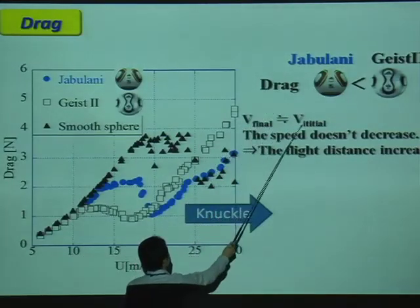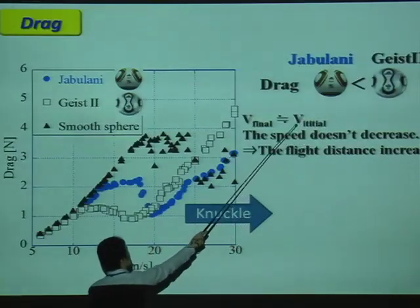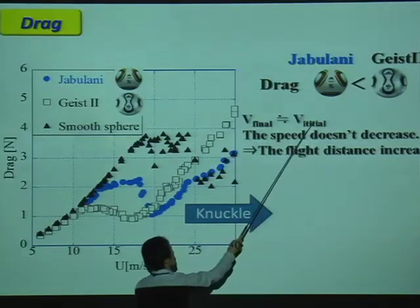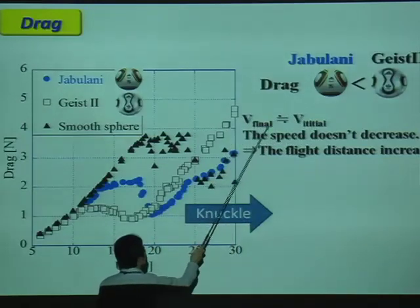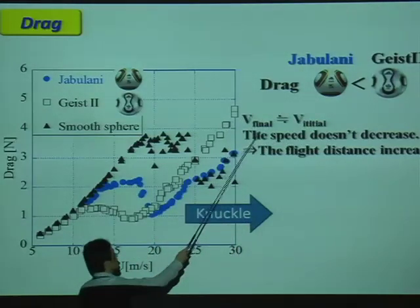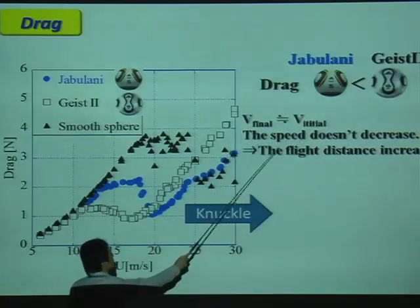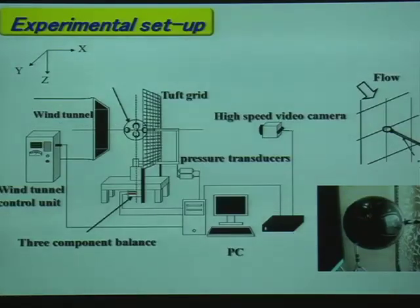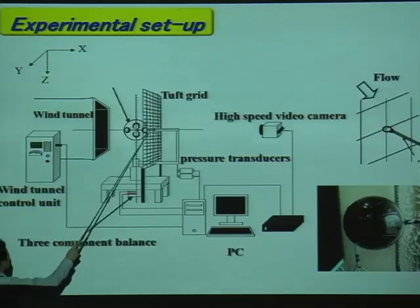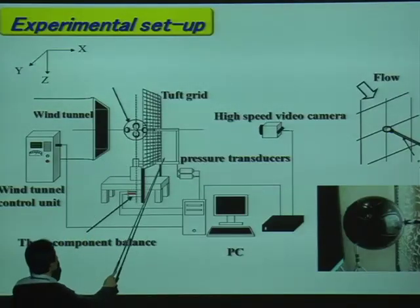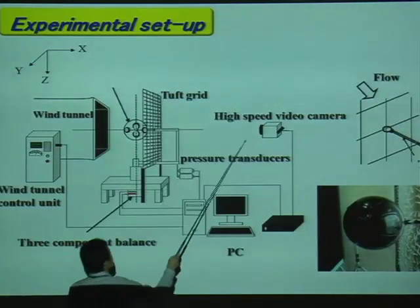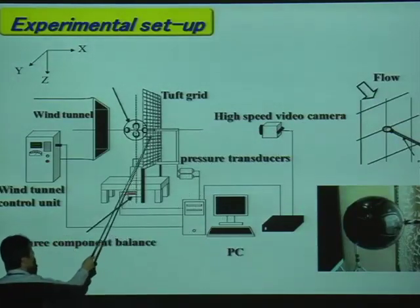Therefore, at the initial launch speed of a shot, the velocity doesn't decrease as much, and the flight distance increases in the case of Jabulani. This is our experimental setup. Here is Teamgeist. We used tuft visualization for wake observation, and also a high-speed camera to record the motion. Tuft is composed of fine cotton threads.